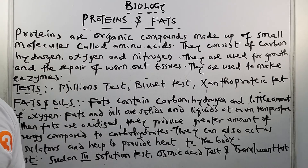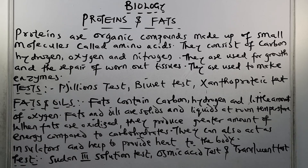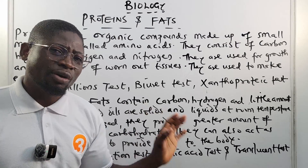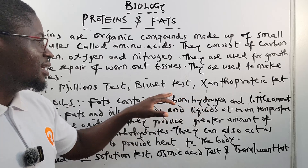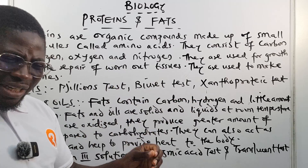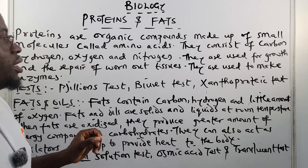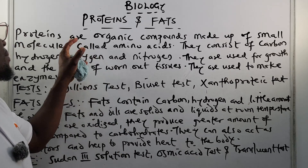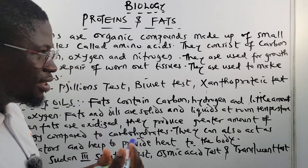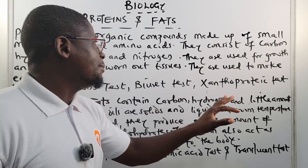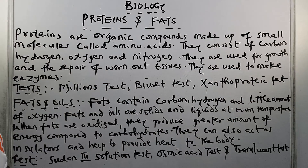Now, proteins. Proteins are organic compounds made up of small molecules called amino acids. In organic chemistry we've covered proteins before, so we won't do a detailed discussion here. Proteins consist of carbon, hydrogen, oxygen, and nitrogen. They are used for growth and the repair of worn-out tissues, and they are also used to make enzymes.